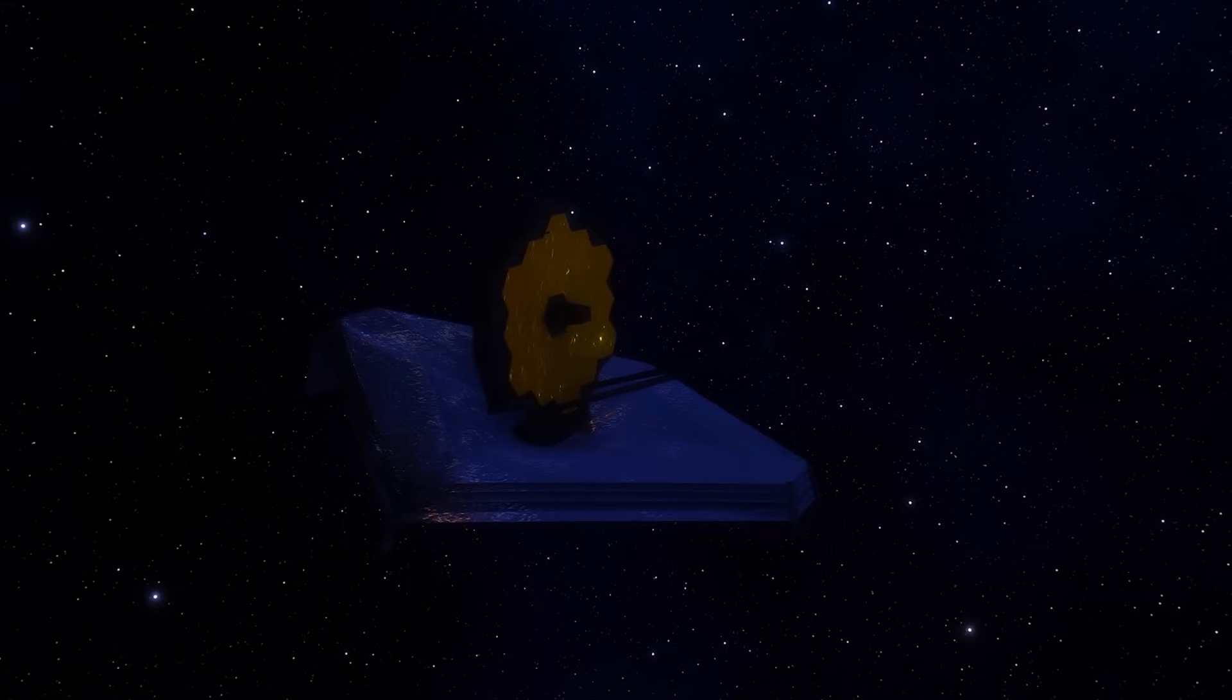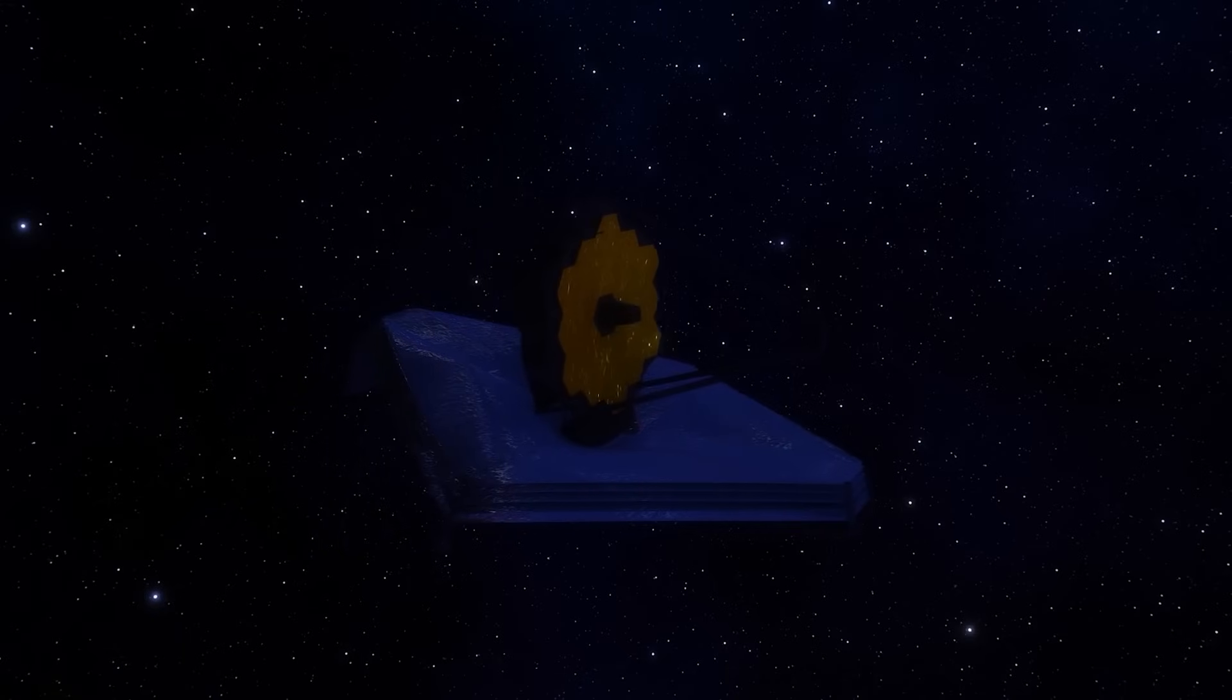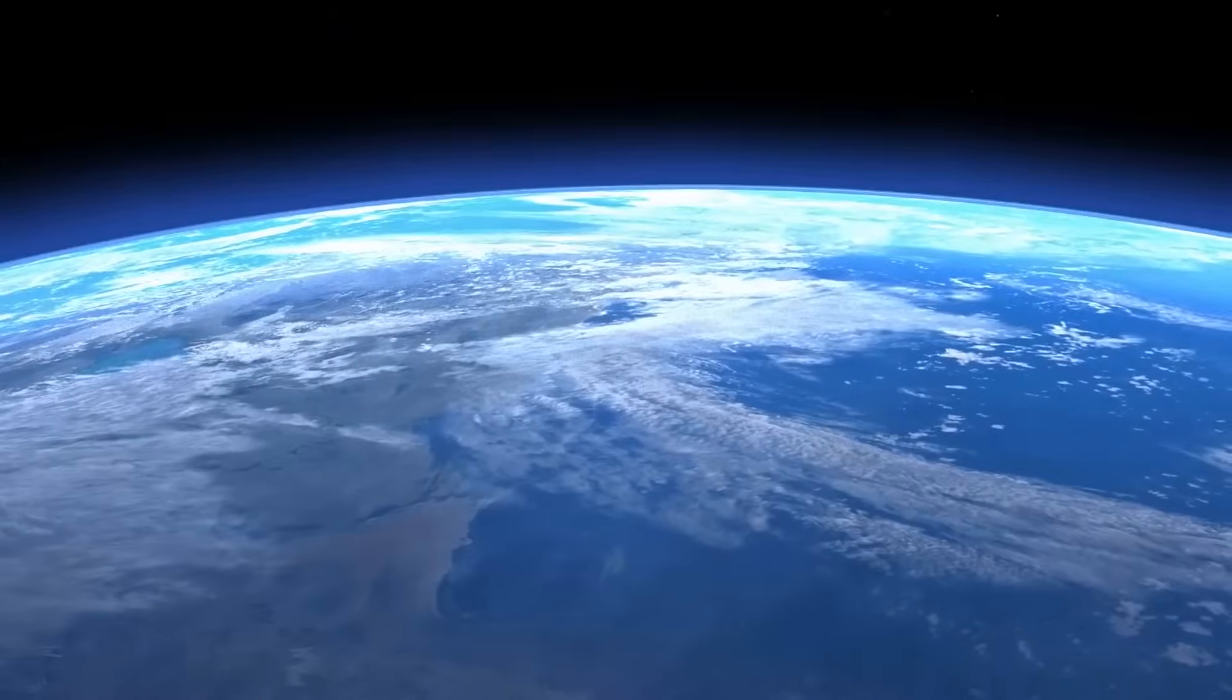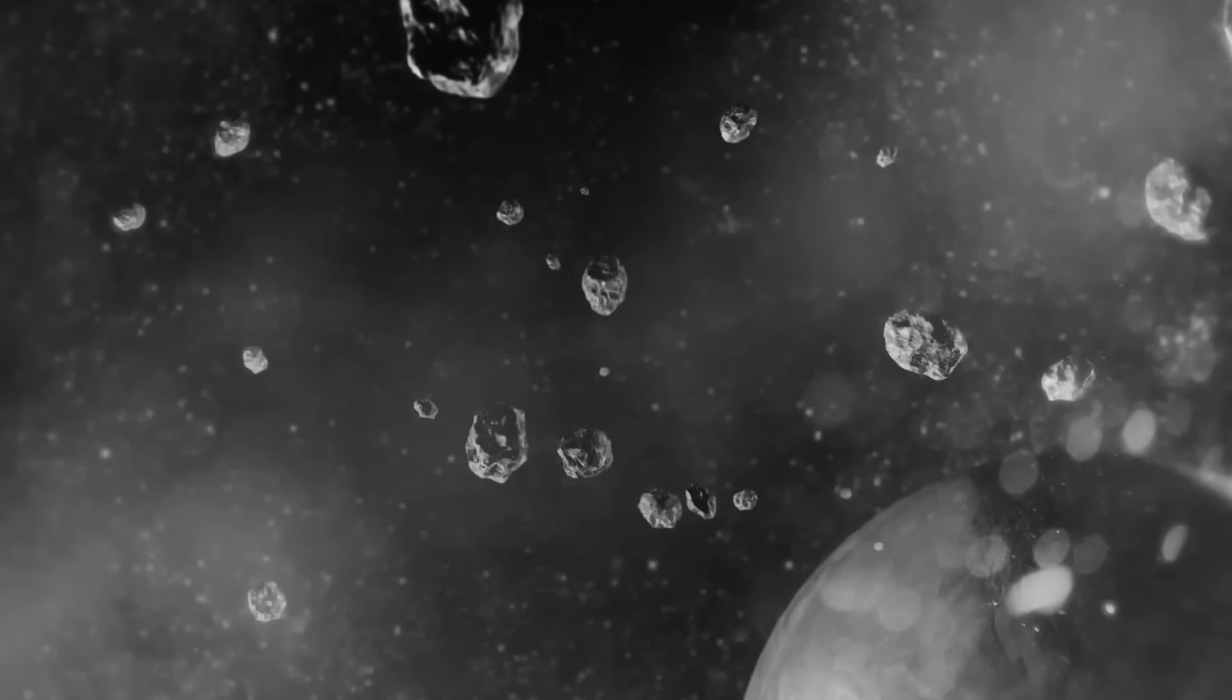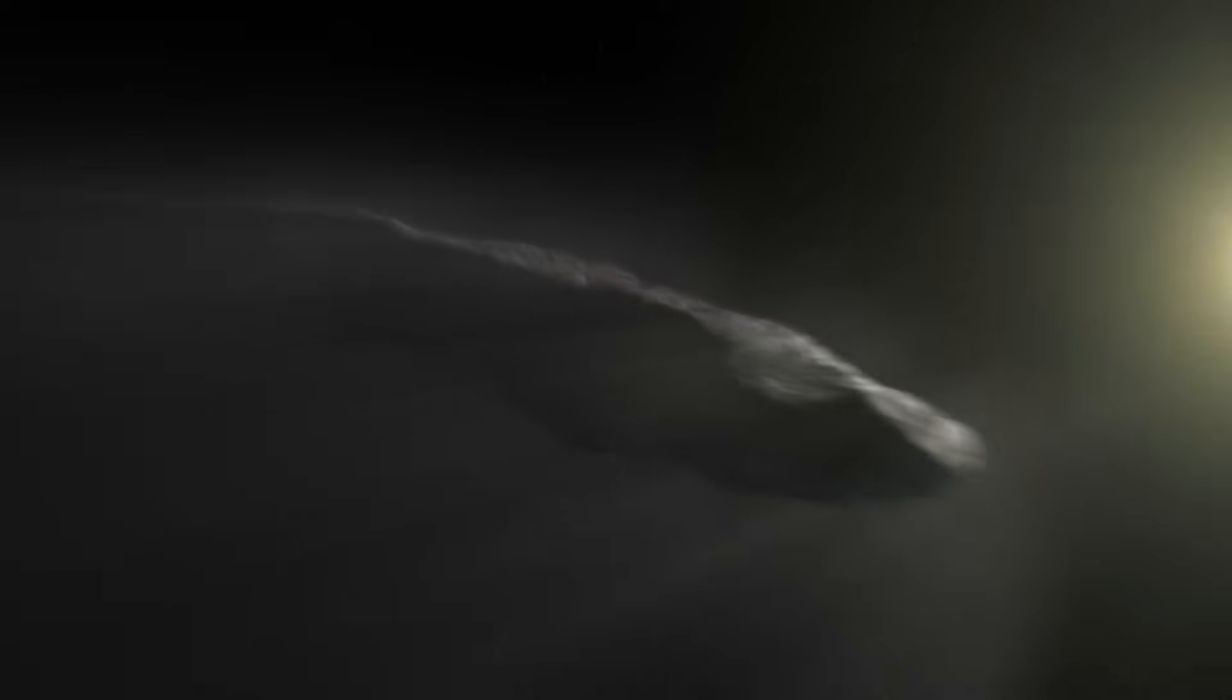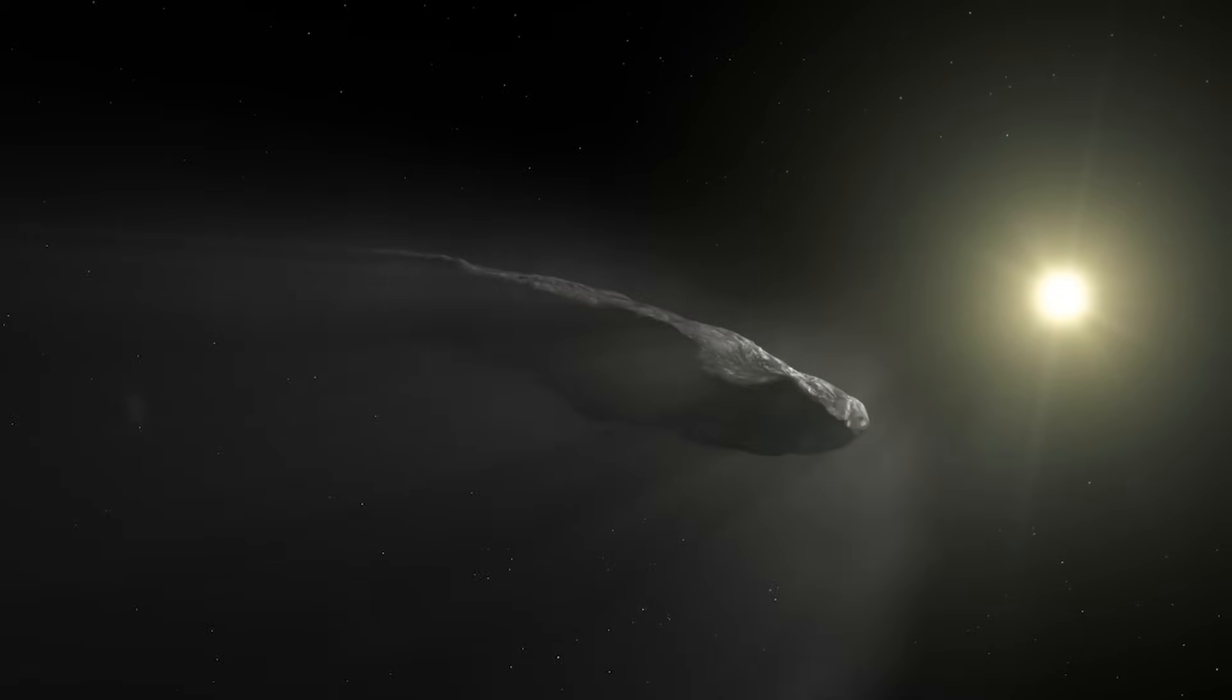Since their launch, these telescopes have revealed numerous findings in space, including the capture of images of large objects in space and the detection of a visitor coming from a considerable distance. This visitor, known as Oumuamua, is an object of interesting and peculiar origin that passes through our solar system.